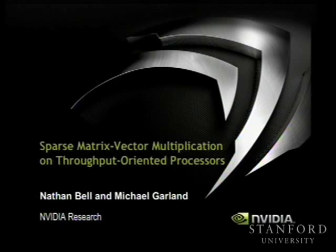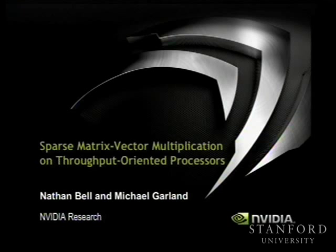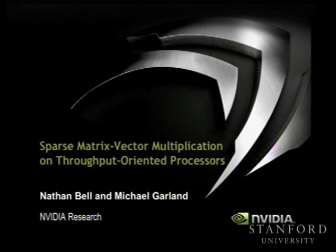Today we'll be talking about sparse matrix-vector multiplication. The title of our paper uses the phrase 'throughput-oriented processors' rather than just GPUs, because the approach we describe would make sense on a variety of different architectures. What we have in mind is something that looks like a GPU — high memory bandwidth and a wide SIMD vector architecture — but the lessons are broadly applicable.